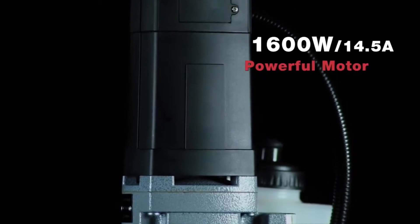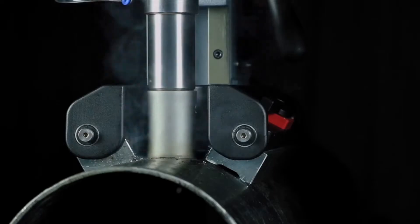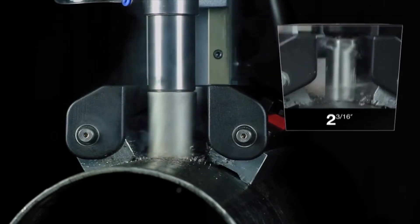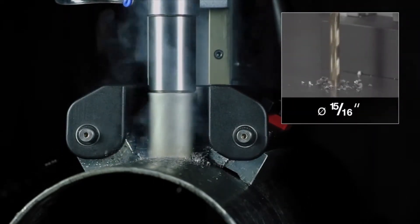Powerful motor of 1600 watts. Annular cutting up to 55 millimeter diameter. Twist drilling up to 23 millimeter diameter.